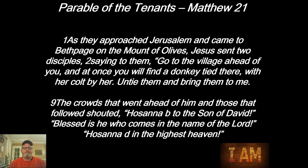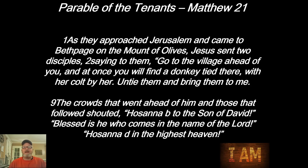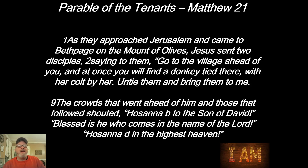We'll pick it up in Matthew 21, verse 1. As they approached Jerusalem and came to Bethpage on the Mount of Olives, Jesus sent two disciples saying, 'Go to the village ahead of you, and at once you will find a donkey tied there with her colt by her. Untie them and bring them to me.' This is Scripture that was foretold — Jesus is going to ride into Jerusalem on a donkey. The Savior entering Jerusalem on a donkey would herald him as royalty. In verse 9, the crowds that went ahead and those that followed shouted, 'Hosanna to the Son of David! Blessed is he who comes in the name of the Lord! Hosanna in the highest!' He's getting all the accolades, and the people are recognizing him as Lord, as Savior, as royalty.